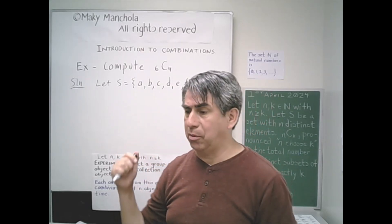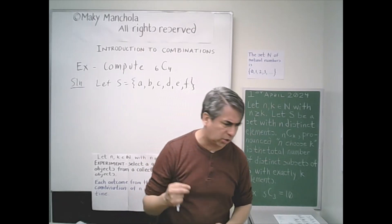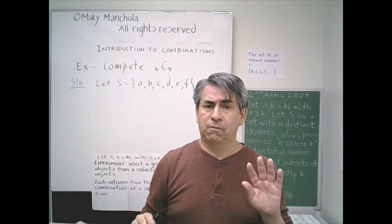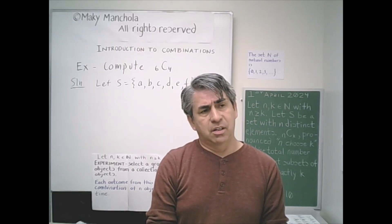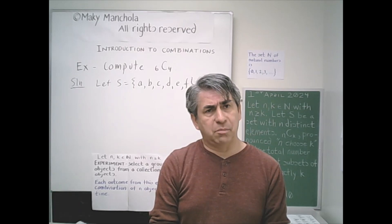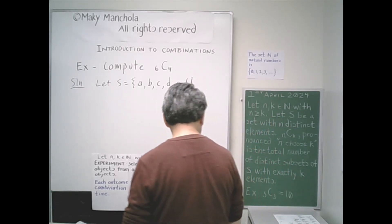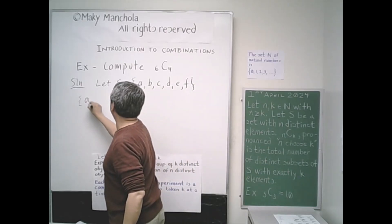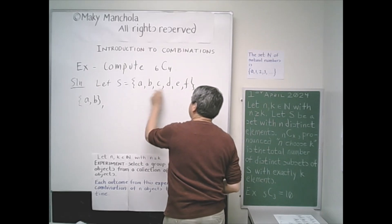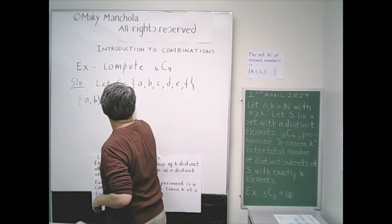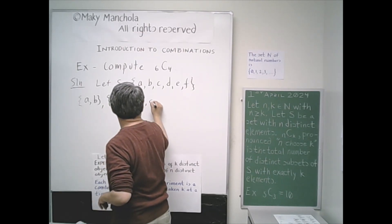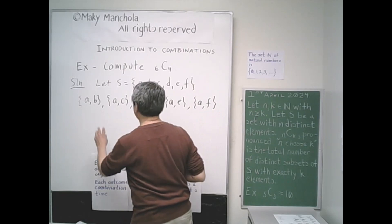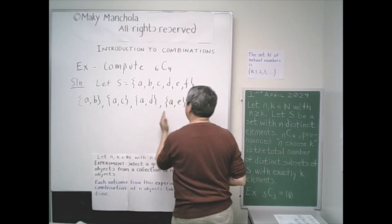Now, I said I was going to solve this problem in the same manner as before, but actually I want to take a shortcut. Instead of listing all four element subsets of S, I'm going to look at the two element subsets of S. Let's begin that process. So remember, two element subsets. We have AB, AC, AD, AE, AF. My next step will be BC, BD, BE, BF.